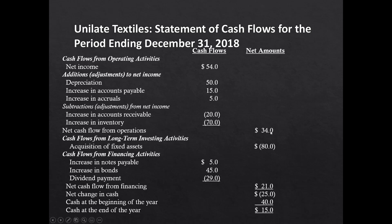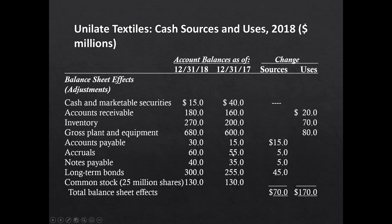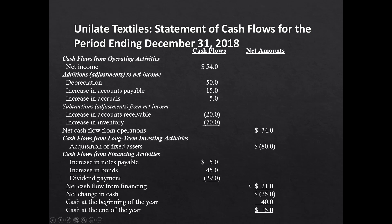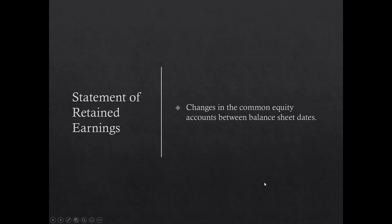The net change in cash is -$25 million: $34 million in from operations, $80 million out to investments, and $21 million net in from financing activities. We started with $40 million of cash and ended with $15 million. This is a straightforward statement of cash flows — it's easier to construct when you analyze balance sheet sources and uses and feed them into the proper operating, investing, and financing categories.